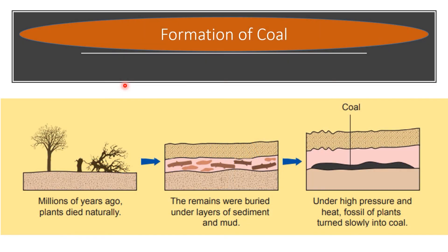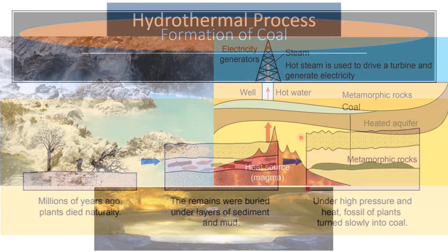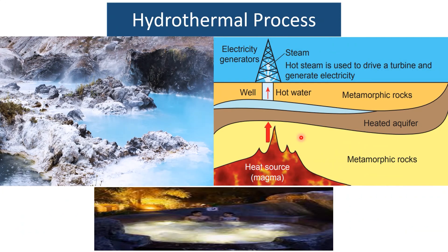Next, let's look at the formation of coal. Millions of years ago, plants died naturally. The remains were buried under layers of sediment and mud. Under high pressure and heat, the fossil remains of plants turned slowly into coal.